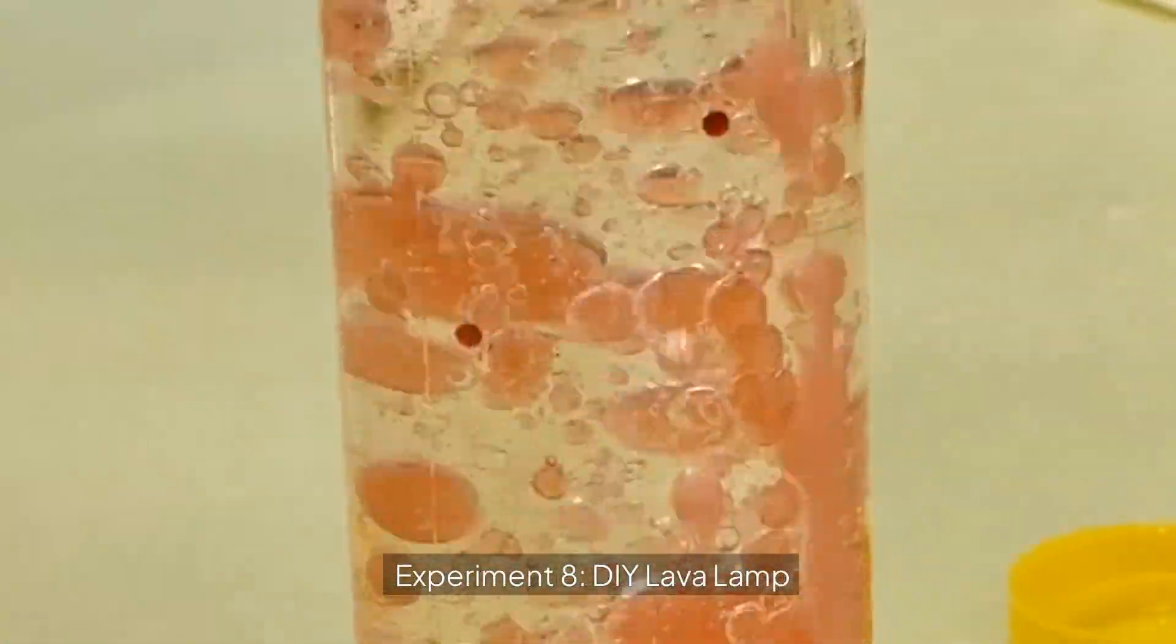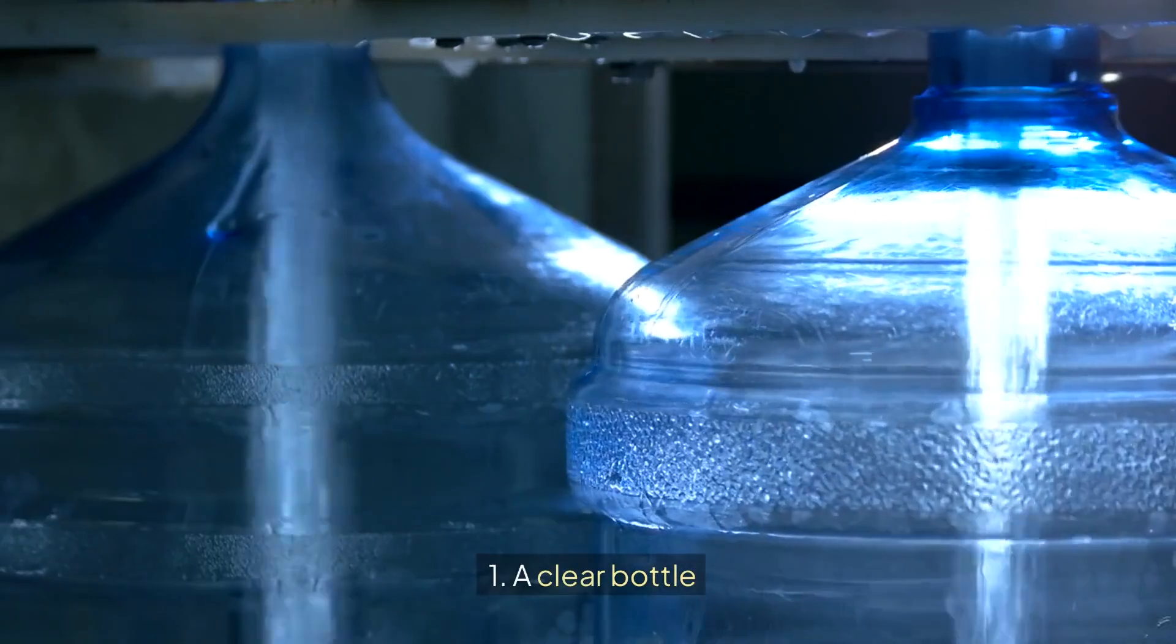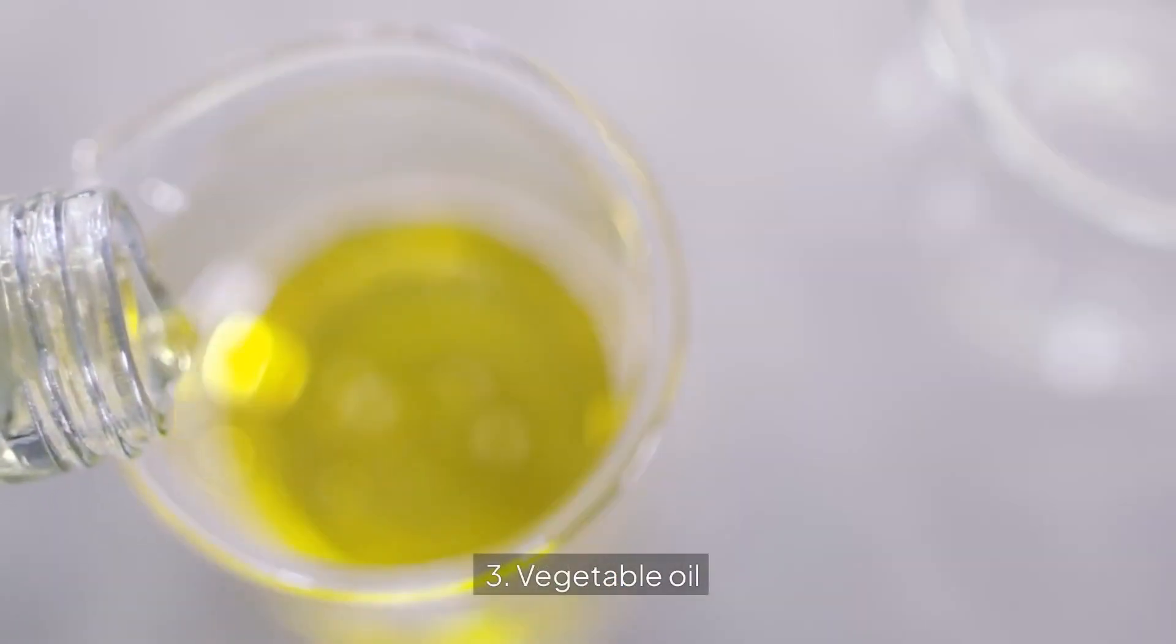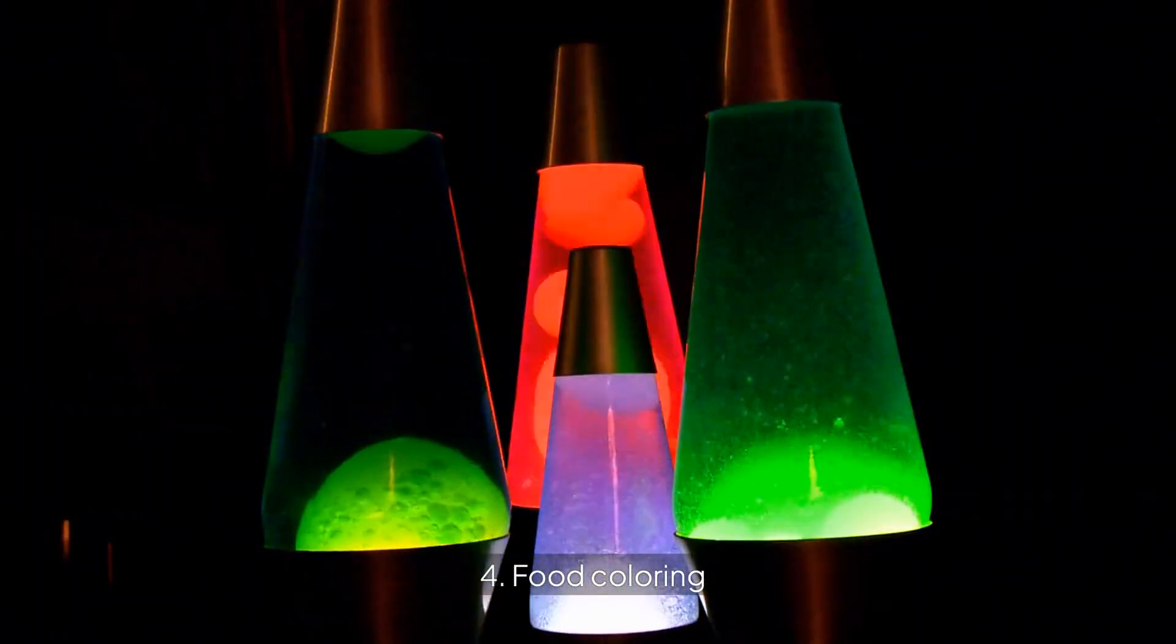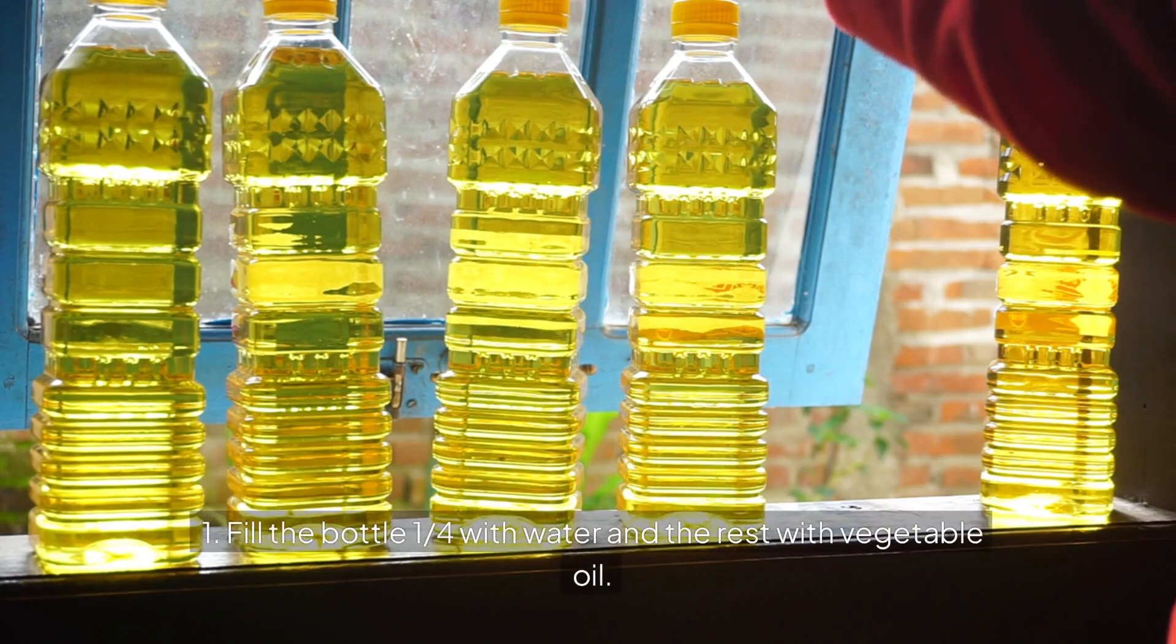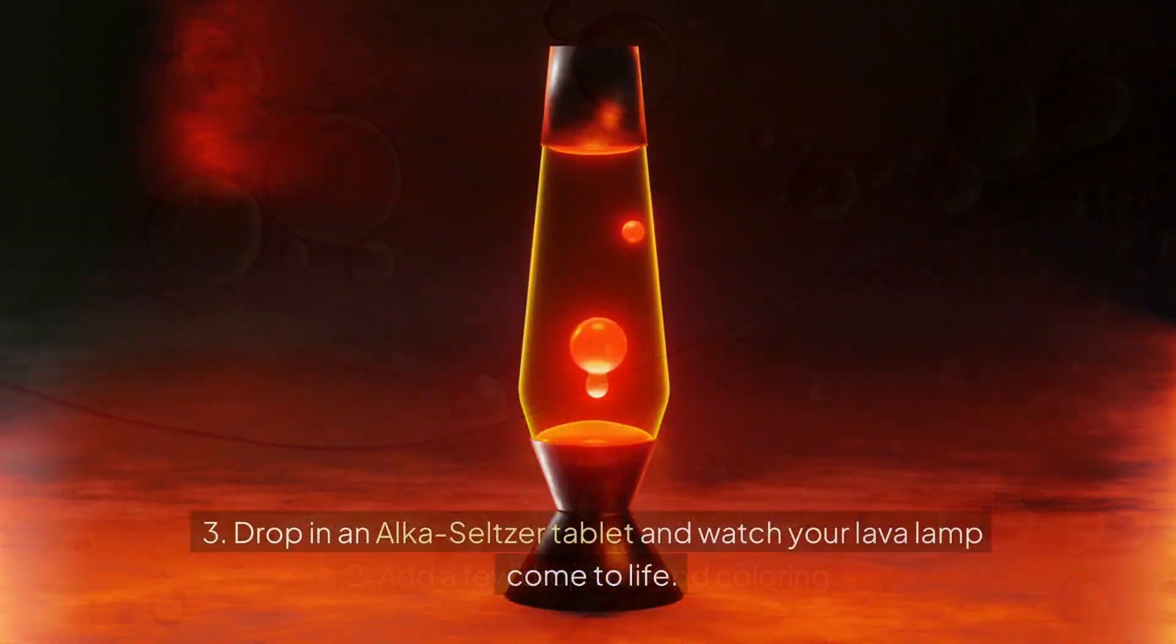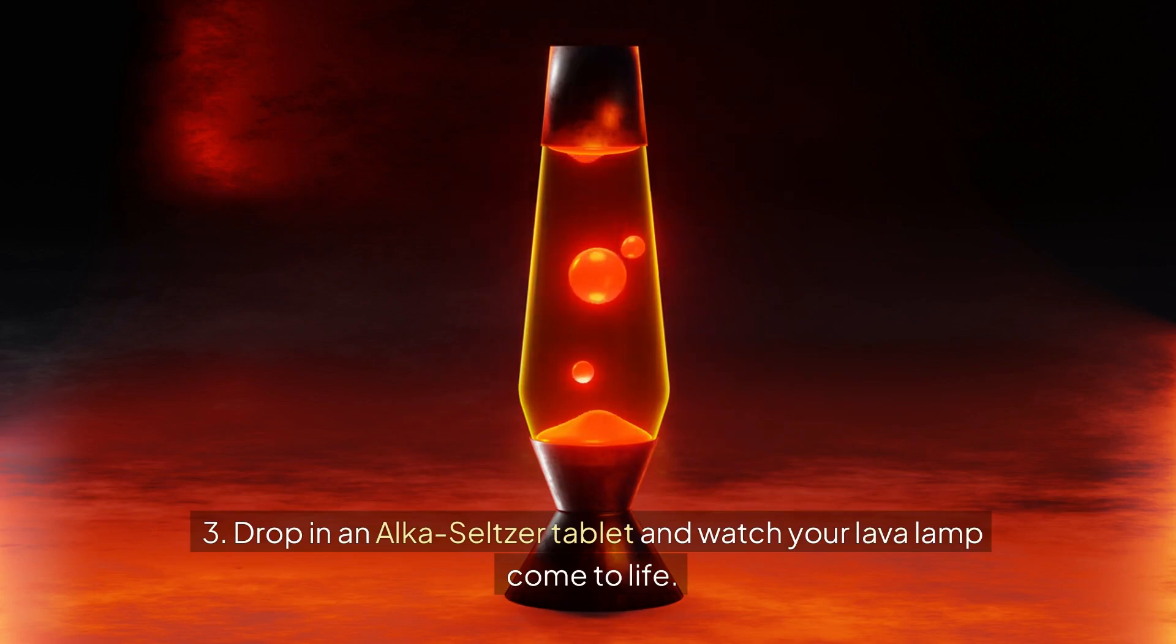Experiment 8: DIY lava lamp. Supplies: a clear bottle, water, vegetable oil, food coloring, and an Alka-Seltzer tablet. Steps: Fill the bottle one quarter with water and the rest with vegetable oil. Add a few drops of food coloring. Drop in an Alka-Seltzer tablet and watch your lava lamp come to life.